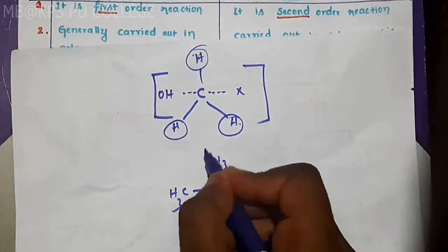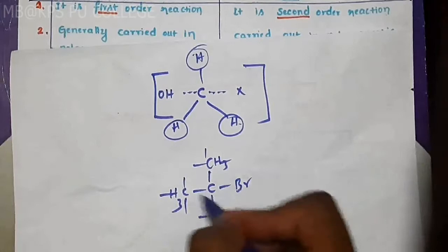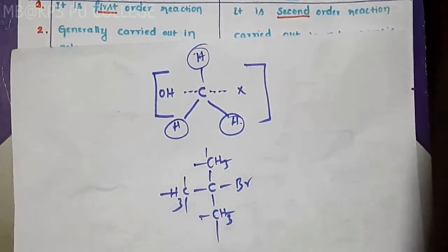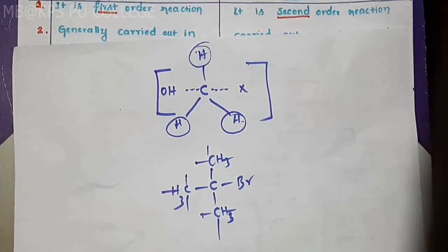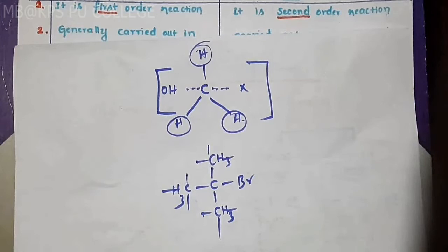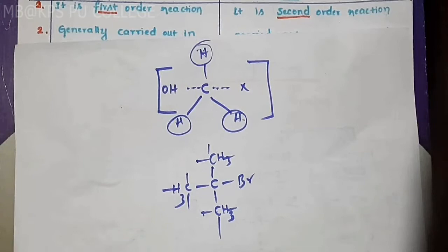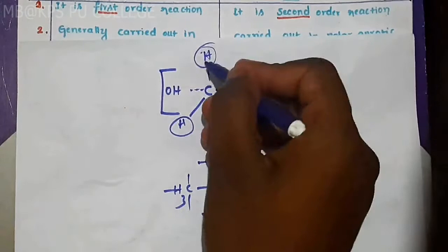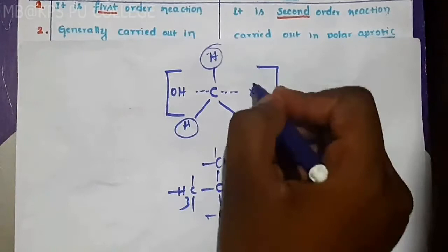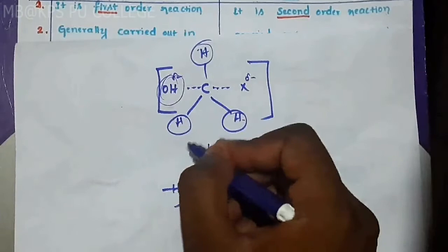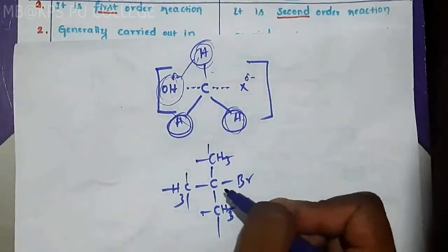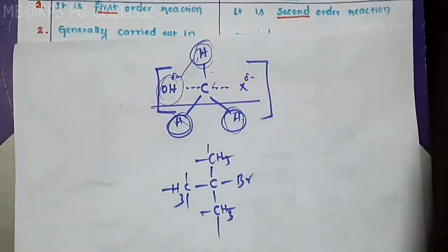Steric hindrance refers to electrons surrounding the atoms or group of atoms around the carbon. Where more electrons (delta-negative character) are present, and a bulky group comes, steric hindrance increases. This makes the detach-attach process slow, making the reaction slower.